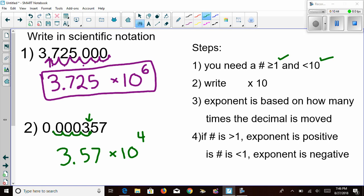Now I need to look at in which direction did I move it. We already said our original number was less than one. So my exponent needs to be a negative. So this is now a negative four.